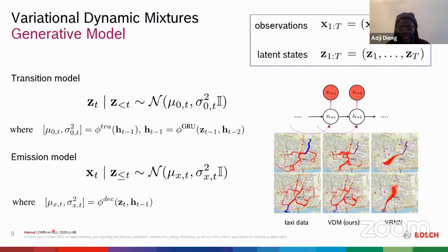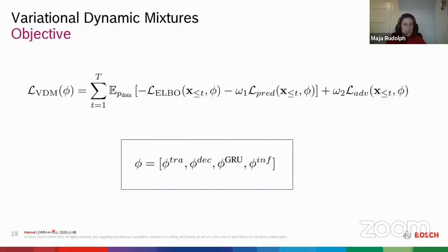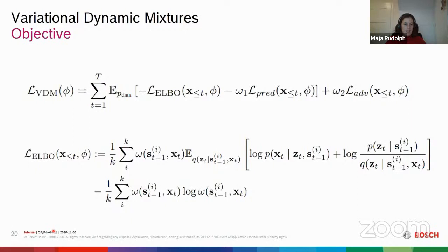Another question from the Q&A: what was the time complexity for the variational multi-model ELBO? We didn't work this out explicitly, but compared to the variational RNN, it's just K times as many factors — so K times the computational cost is the additional factor.